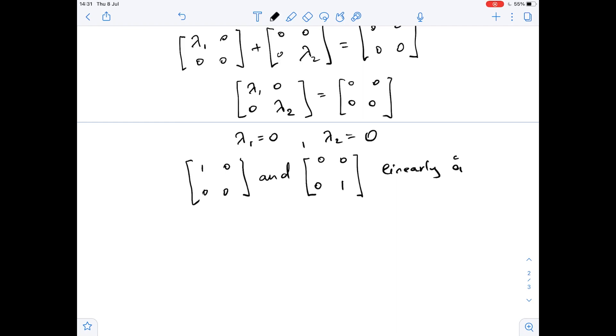So the basis for W is E equals {[1 0; 0 0], [0 0; 0 1]} and the dimension of W is two.